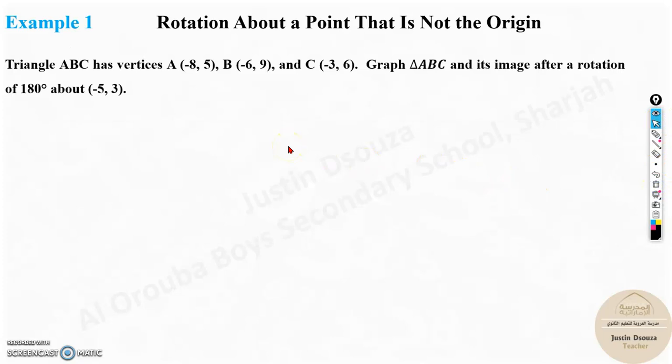Next. Let's look into the problem. A triangle ABC has vertices A, that's given over there. These are the vertices. We need to graph it and then we need to rotate it along 180 degrees. But there is about a particular point. So this is very important. Minus 5, 3. This is a point where we rotated.